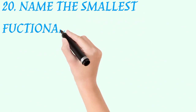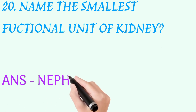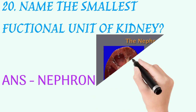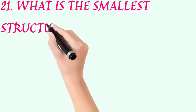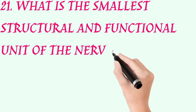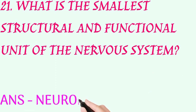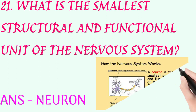Name the smallest functional unit of the kidney. Answer: nephron. What is the smallest structural and functional unit of the nervous system? Answer: neuron.